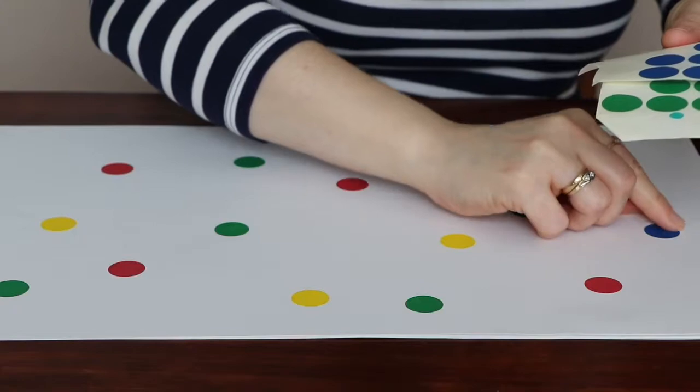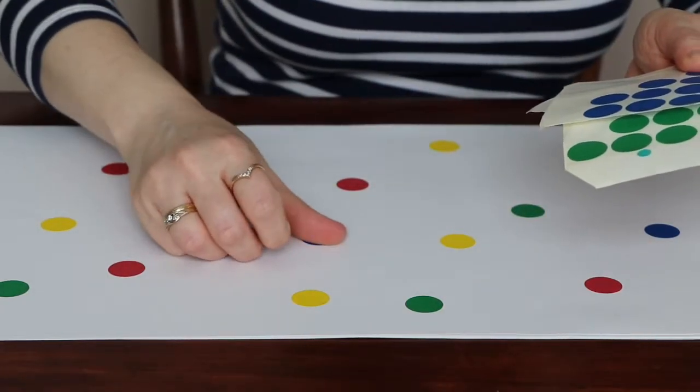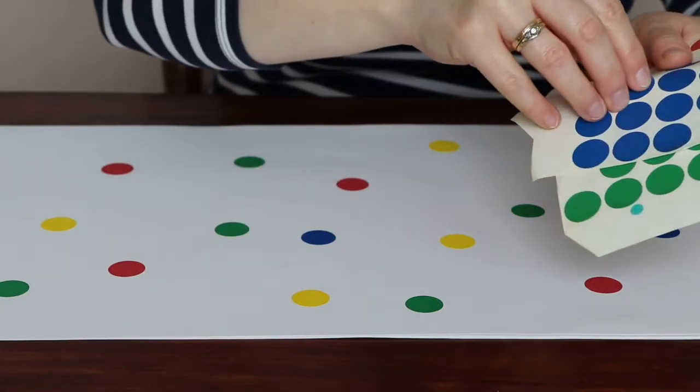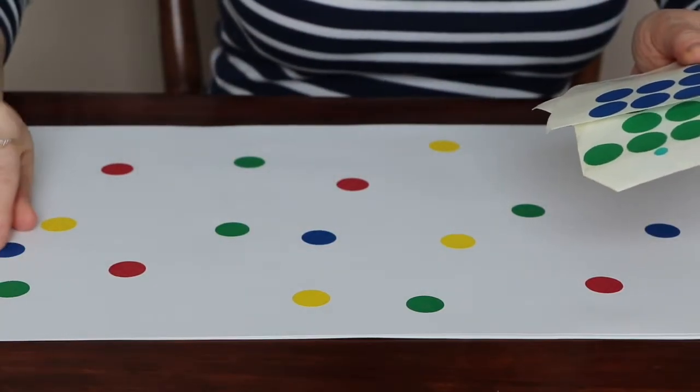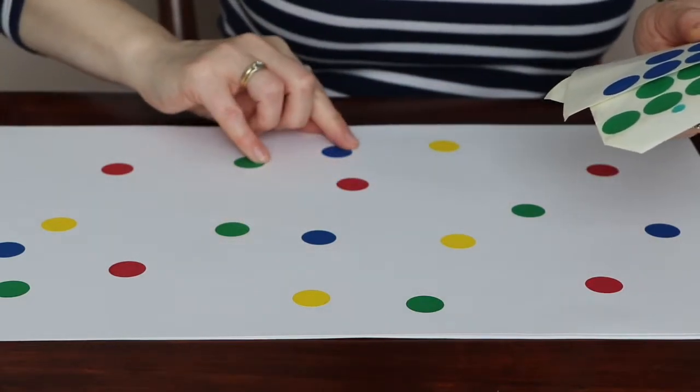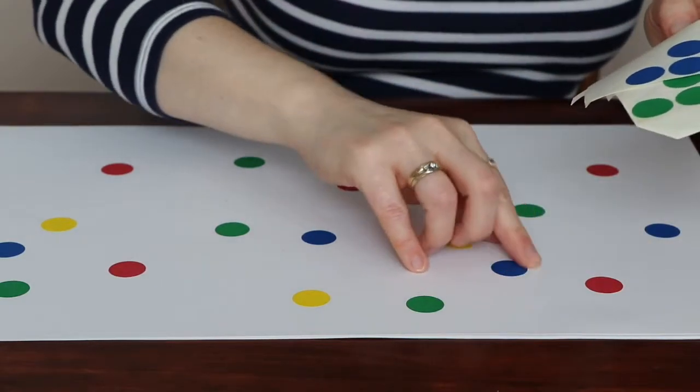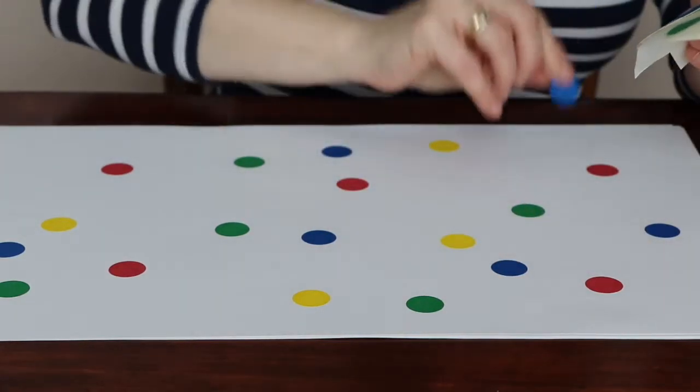For very young children, apply large colored dots to your paper or color in your own large colored dots. The larger size provides a greater target area when children are connecting the dots.